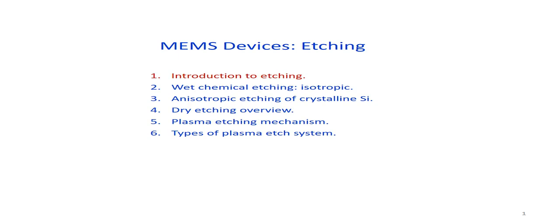Hello, today we are going to learn about etching. Once the substrate has been coated or deposited with the desired films and the lithography process has been performed, the next step for the creation of MEMS devices is etching. In this presentation we will learn about the introduction to etching, wet chemical etching, dry etching, plasma etching, and the different types of plasma etch systems.